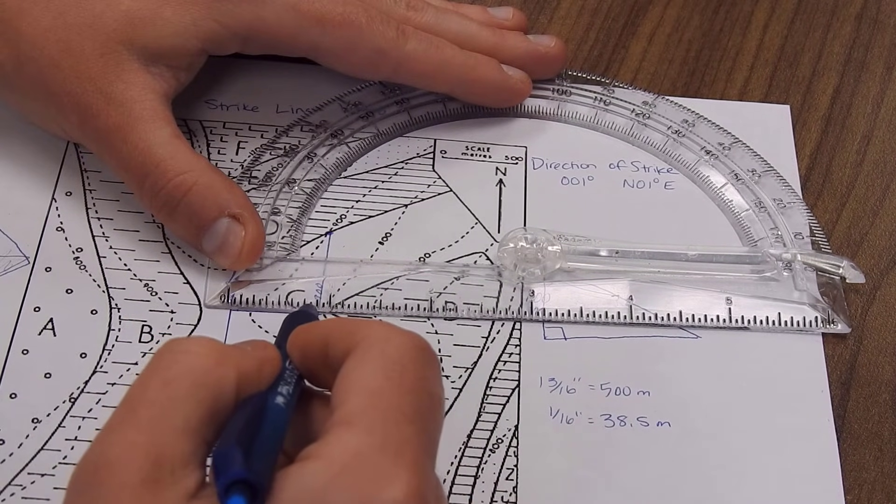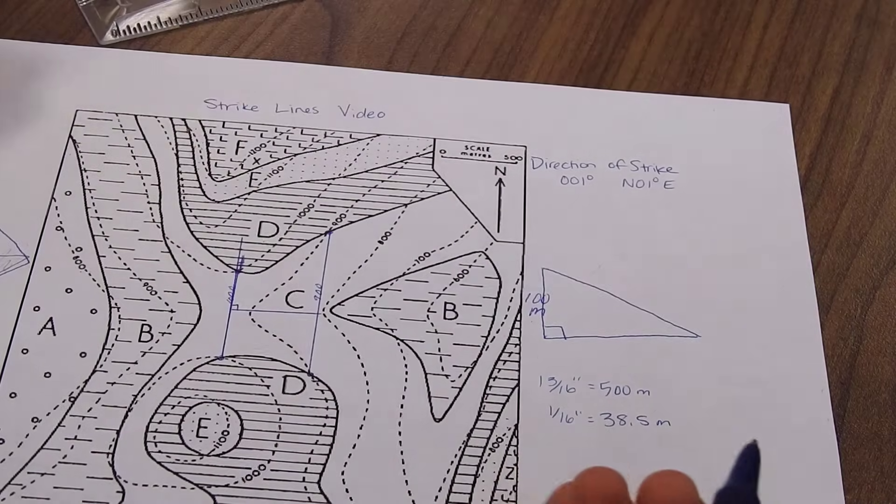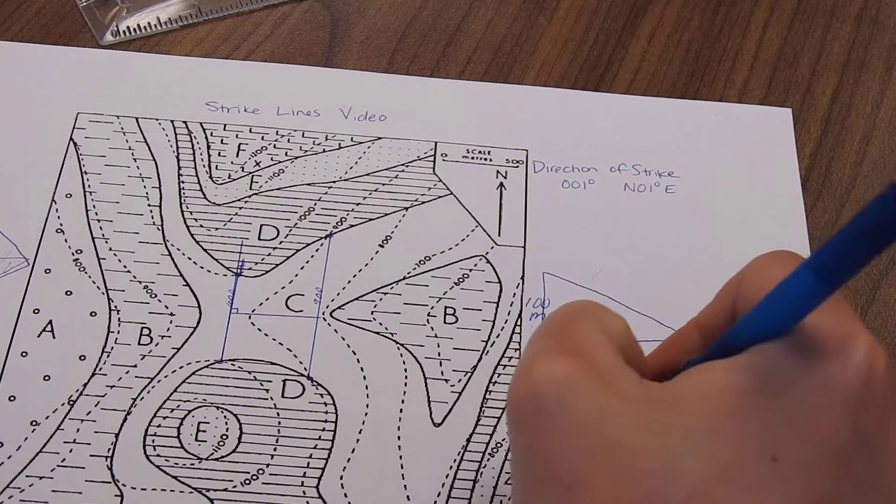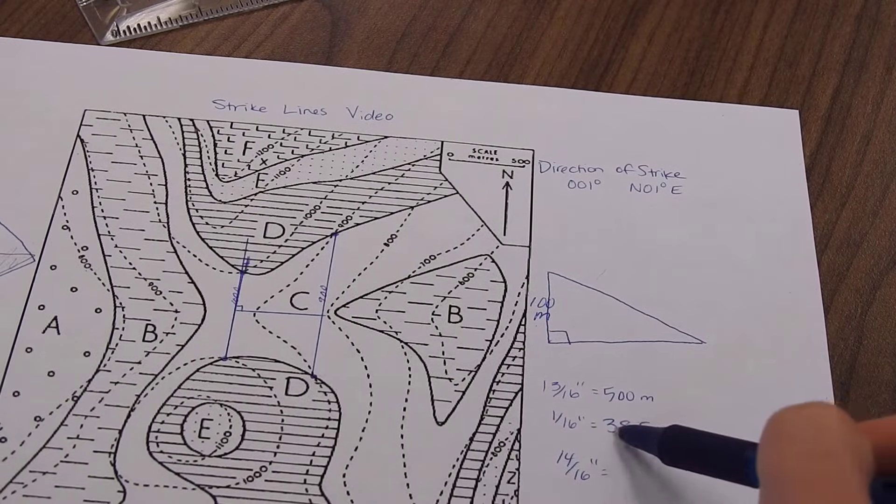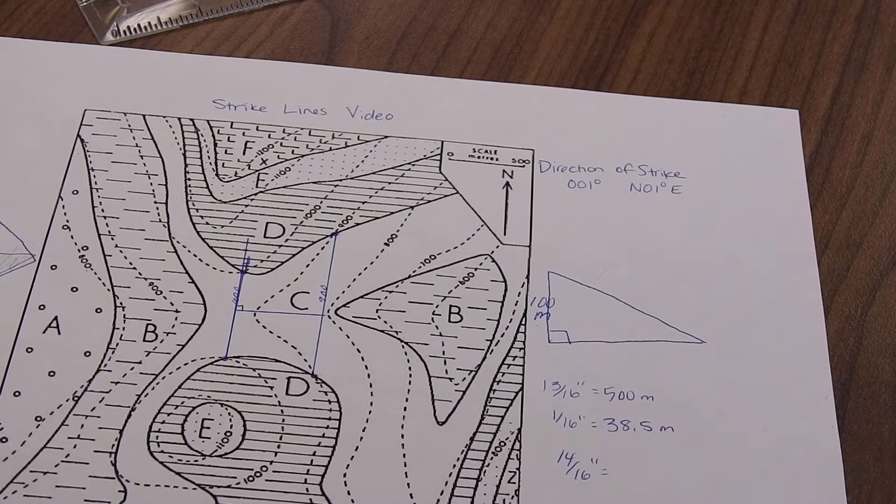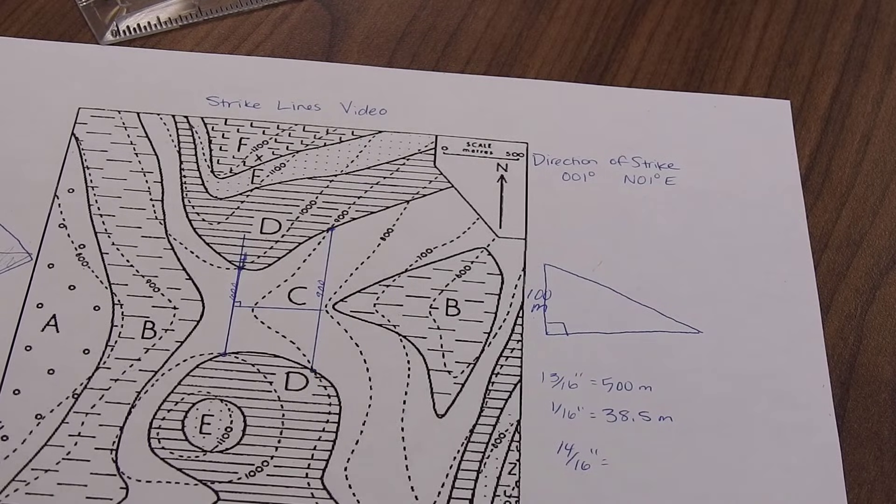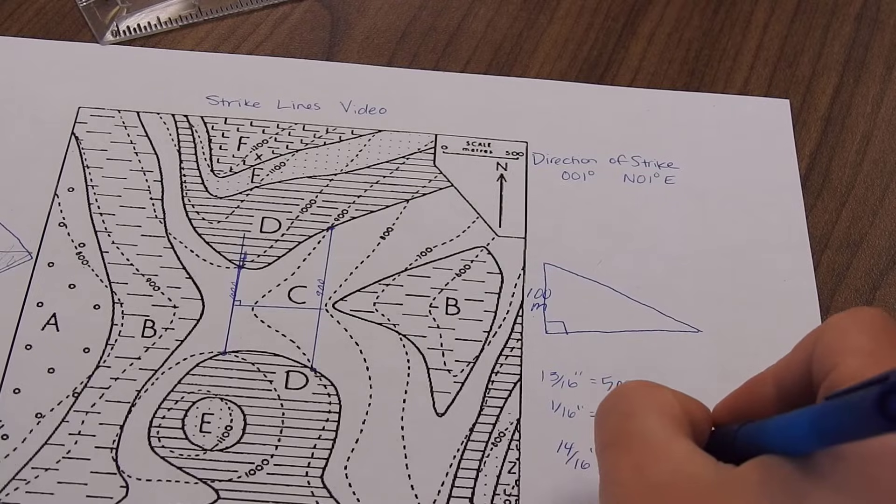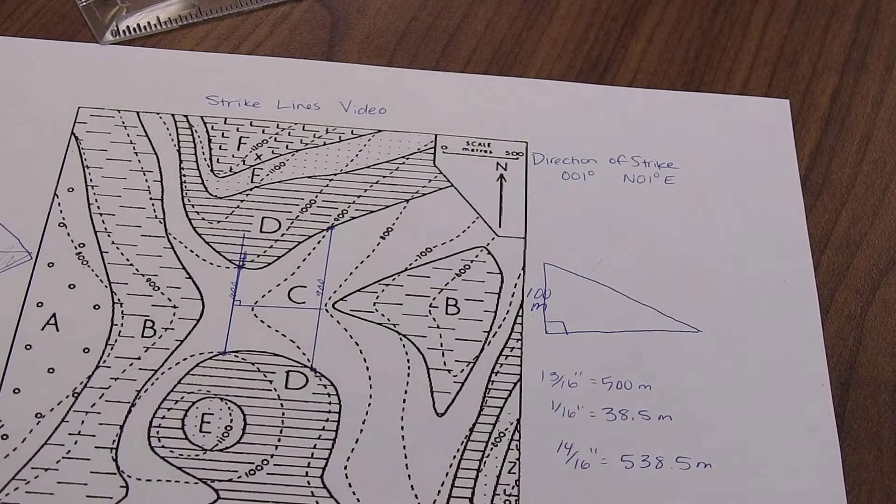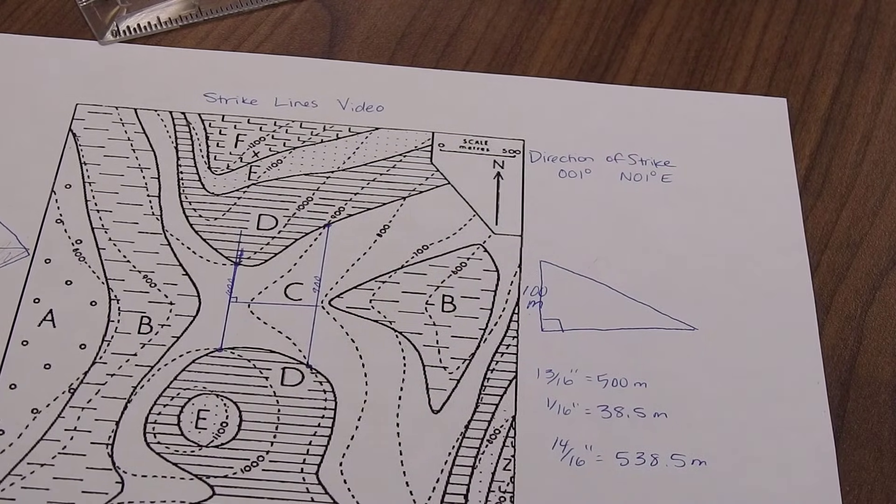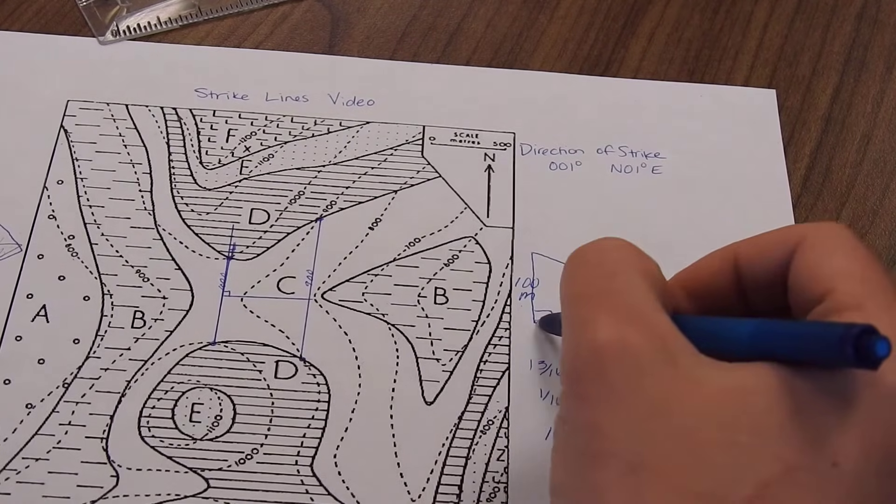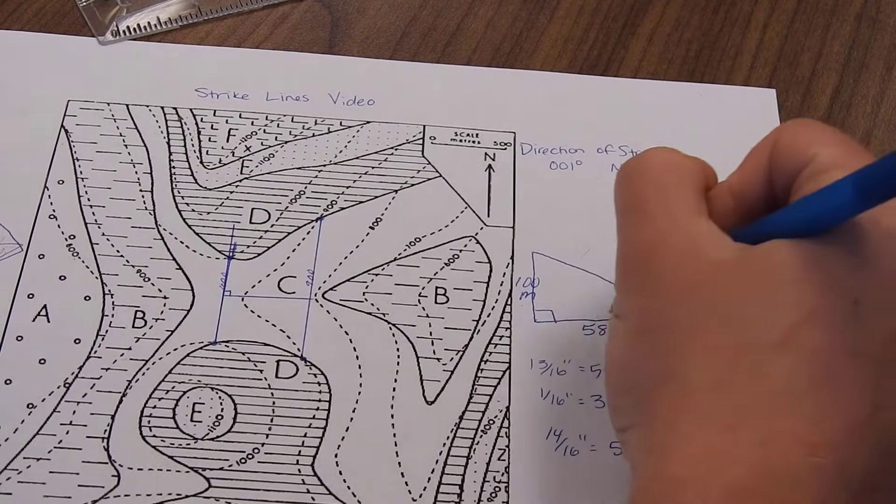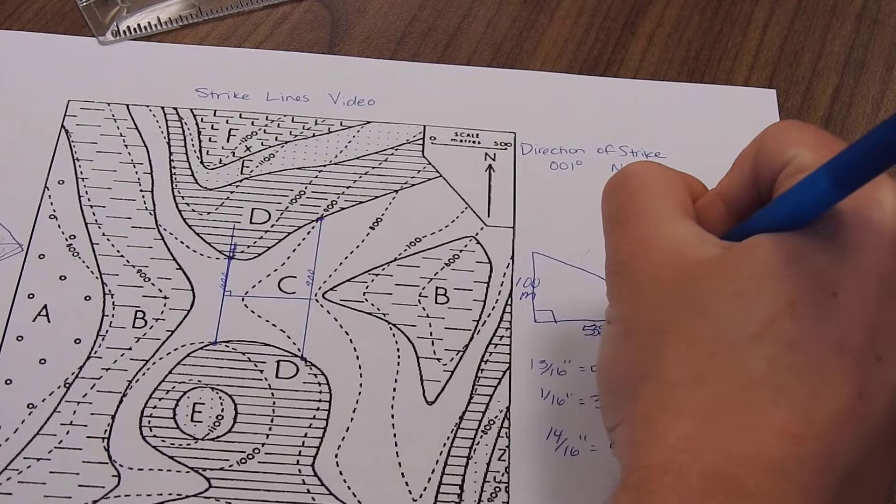9, 10, 11, 12, 13, 14 sixteenths. So we're going to do 38.5 times 14 and that is 538.5 meters. So the horizontal distance between those two strike lines is 538.5 meters.